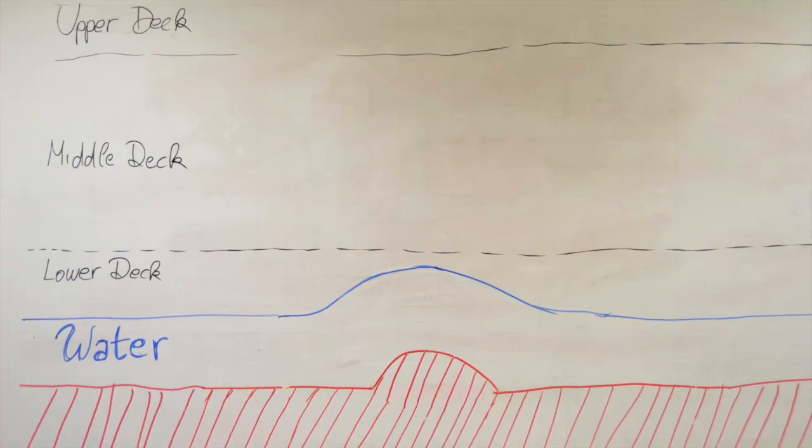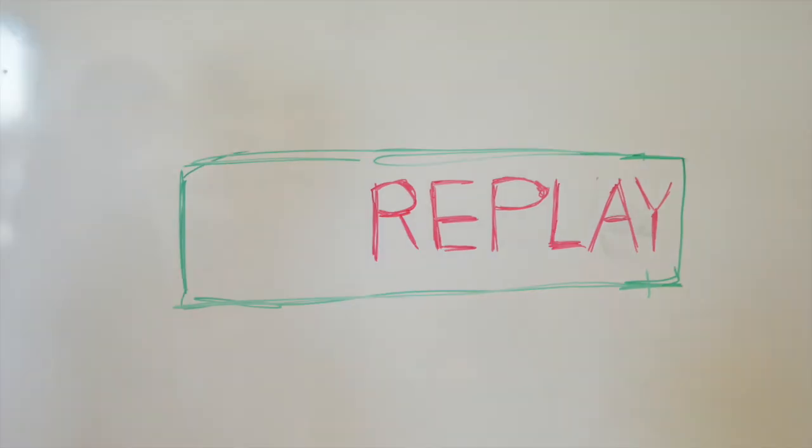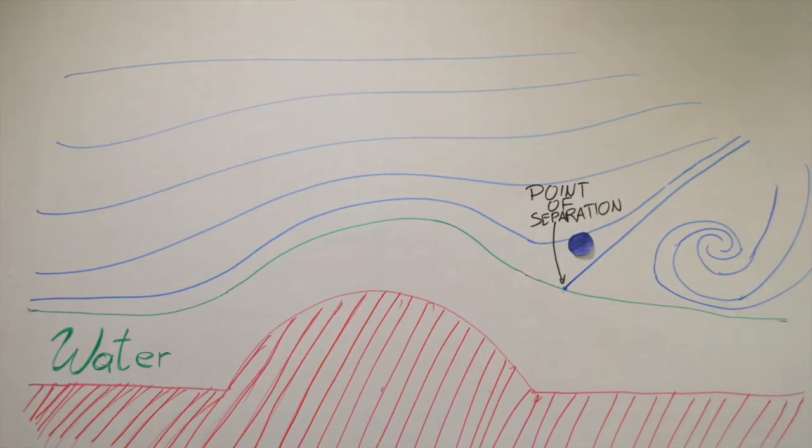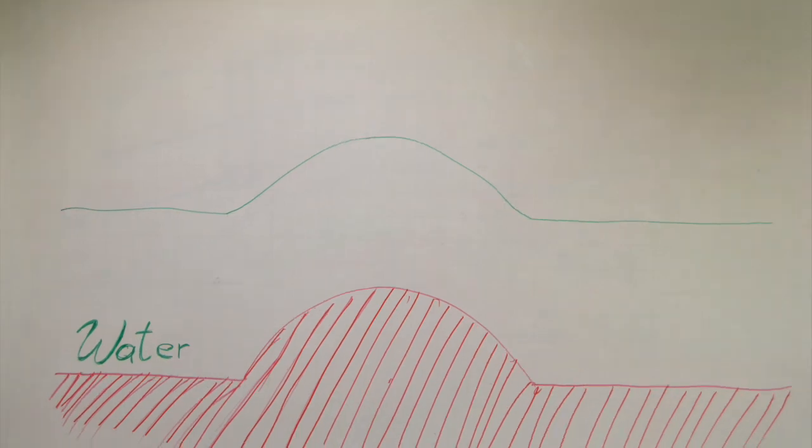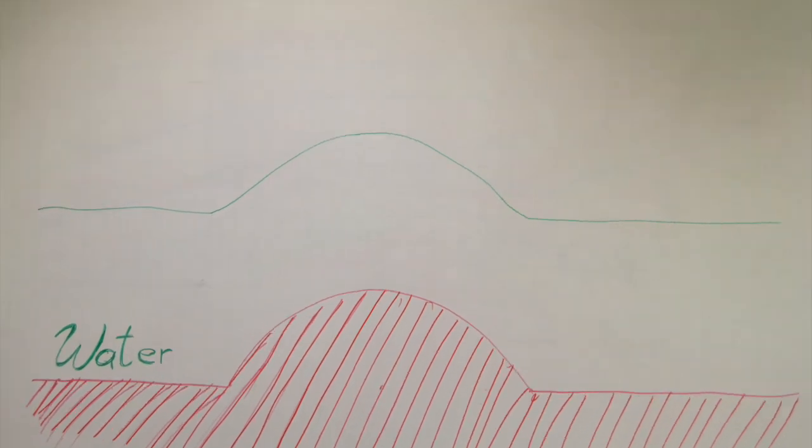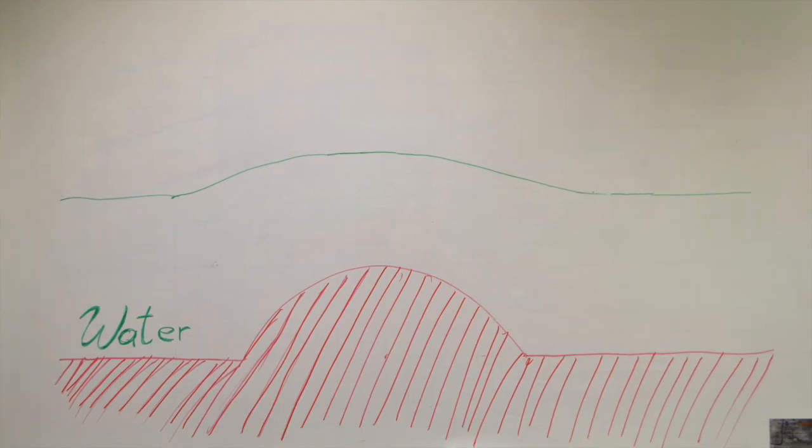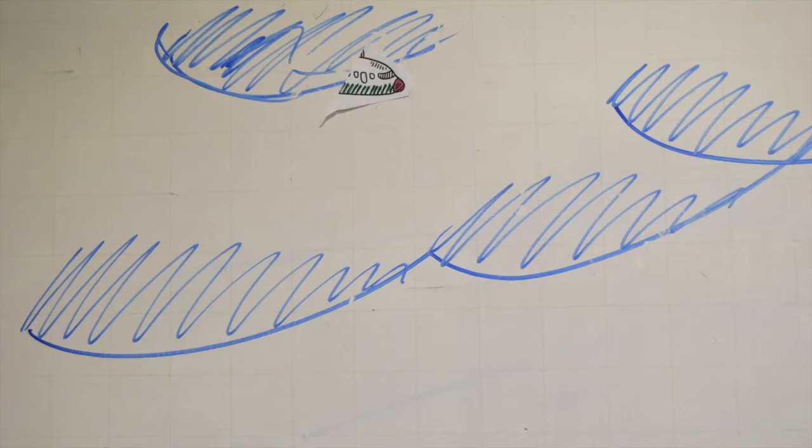The application of triple deck theory says that the point of separation is pushed back. This is a consequence that the water doesn't follow the bump like this, but like this. The water's bump is smoother than the rivet itself and for the turbulence that's a very good thing.